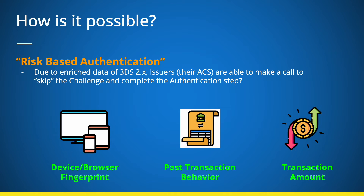How is this possible? This is due to a feature called as risk-based authentication, where the issuers are able to take a decision and skip the challenge. This is primarily because the 3DS 2.x protocol has a lot of data points being exchanged between the parties, and due to this, the issuer is able to take a decision to skip the second factor authentication.